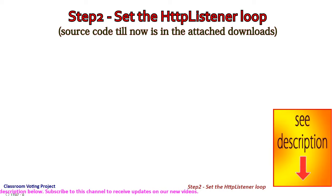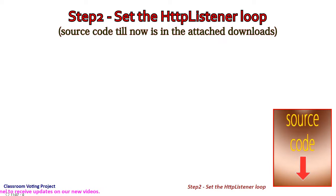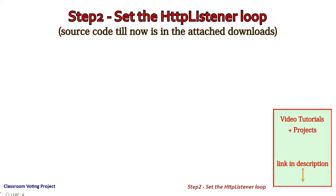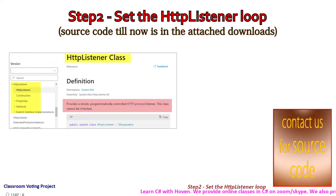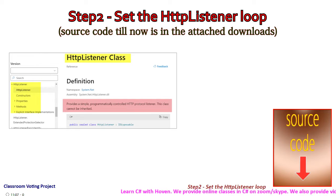This is the second step of writing our project on the classroom voting application. We shall now set an HTTP listener to listen and respond to requests coming from a browser. For this, .NET Core provides a class called HttpListener. Most of the basic plumbing is handled by this class. We need only four things to get it working.